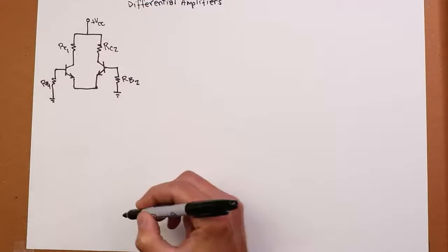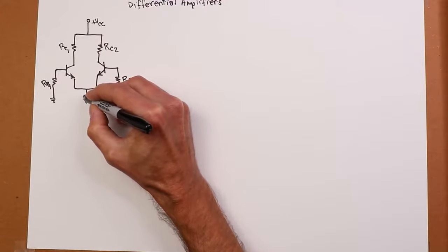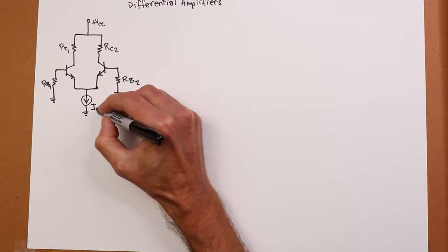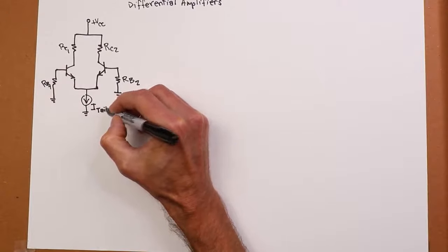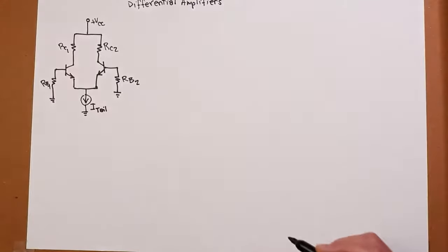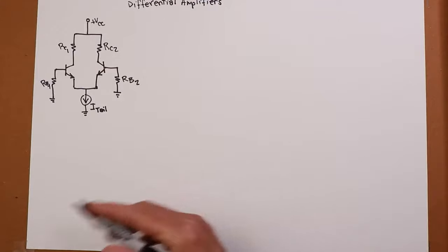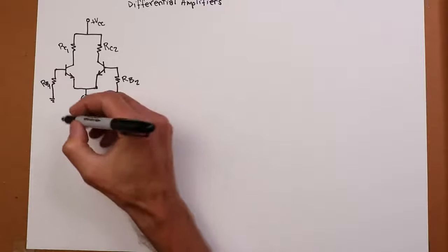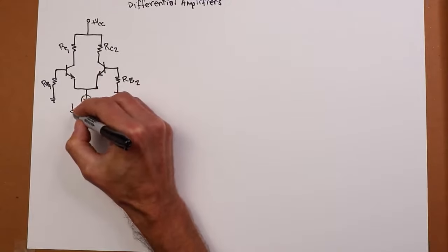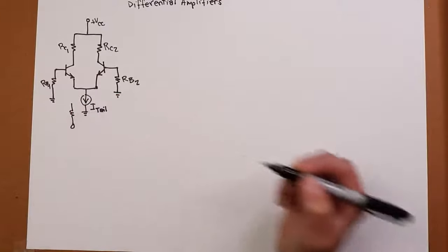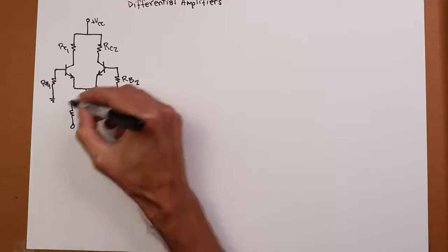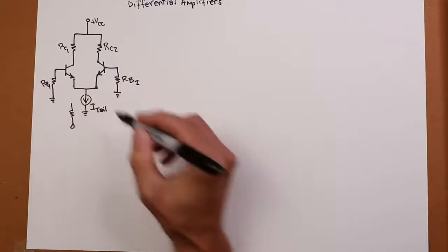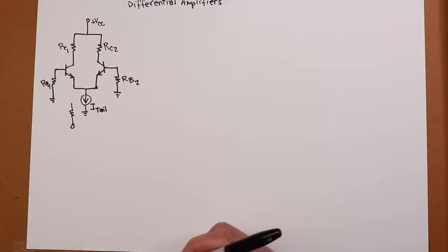Down here, we're going to have a current source. So in the simplified version, we would just say, hey, there's a current source here. We would call that IT for ITail. In the old days, these were known as long-tailed pairs. That's where the ITail comes from. In a very simple configuration, what we would do for a current source is just have a resistor going down to a negative power supply. Most of that voltage would drop across the resistor and that would establish the current.